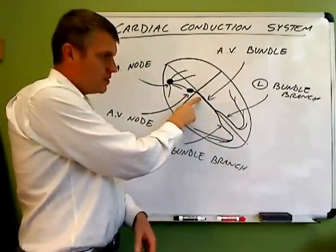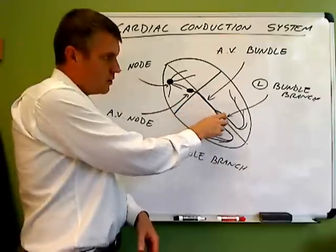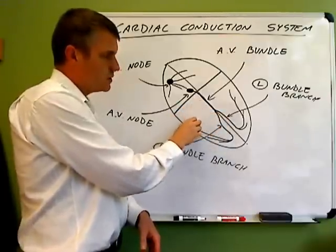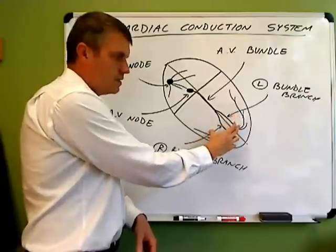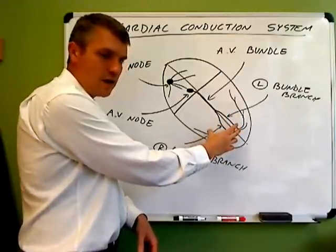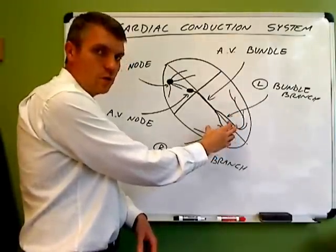If this was damaged, if there was a lesion here or a lesion lower down in the bundle branches, then auto-rhythmicity centers deep inside of the myocardium of the ventricles would take over.